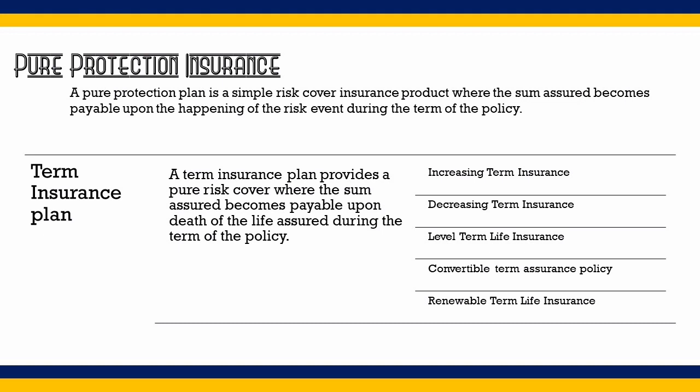If something goes wrong — meaning death occurs after the policy term — then nothing can be done; the protection is given only for a specific term. Term insurance is the most basic type of life insurance in the market — a pure protection plan that provides extensive coverage. One of the important highlights of term insurance is that it is very affordable. You may see advertisements claiming just 10 rupees per day for a one-crore term cover, which works out to about 3,600 rupees per annum.